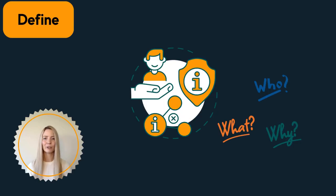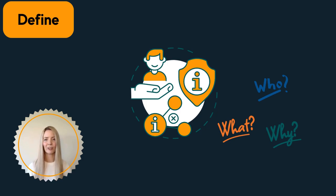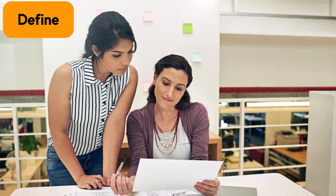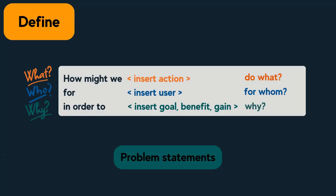The next step is to define. This is where you clearly define the problem you're trying to solve. It's essential to narrow down the focus to ensure you're clear about what you're trying to solve and how it aligns to research from the previous stage to help guide the design process. This could involve summarising key insights from the empathise phase, identifying patterns and common themes, or by creating a problem statement with items like identifying the user, their need, insights, and what actions need to be taken.